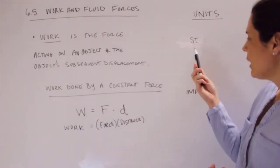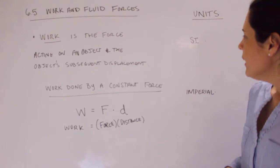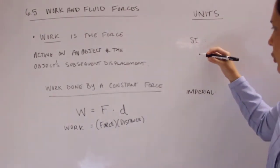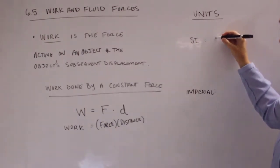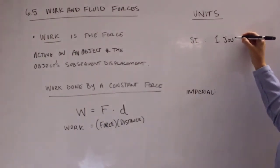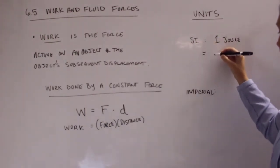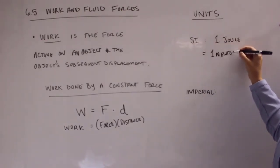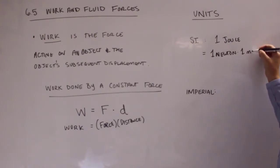So if you're using the international system or SI units, then the units that you have for work is actually called a joule. So 1 joule is equivalent to 1 newton times 1 meter.